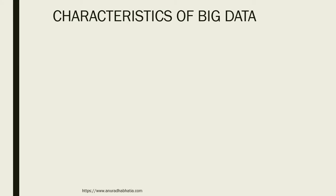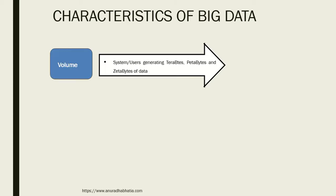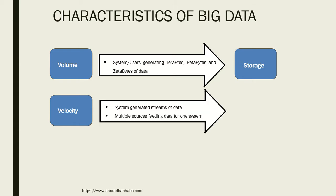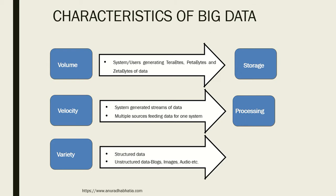What are the characteristics of big data? We call them the three V's, now increased to six. Volume: system users generate terabytes, petabytes, and zettabytes of data, so we need storage. Velocity: data flows in at high speed, so we need faster processing systems — system-generated streams of data from multiple sources feeding into one system. Variety: structured and unstructured data — blogs, images, audios, and videos — requiring different presentation formats. So volume, variety, and velocity, along with storage, processing, and presentation, are the key characteristics of big data.